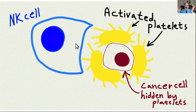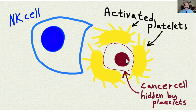The natural killer cell essentially says, 'Oh, nothing here but normal platelets,' and doesn't do anything to the cancer cell. So chronically activated platelets increase the risk of metastatic cancer spread.